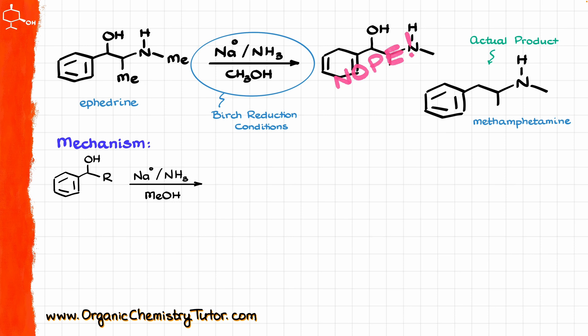So now when I'm bringing in my sodium and liquid ammonia in the presence of the alcohol, the very first thing that's going to happen is sodium is going to shed its electron and we are going to have a solvated electron in liquid ammonia — pretty standard start for the Birch reduction reaction. Next, our electron is going to react with our aromatic ring, like so, which is going to produce the following anion radical.